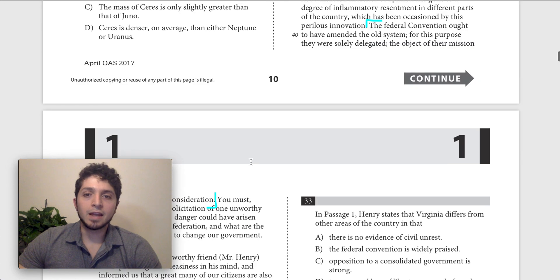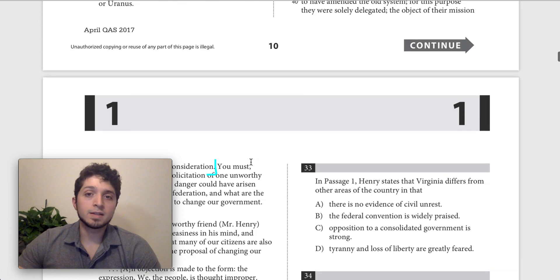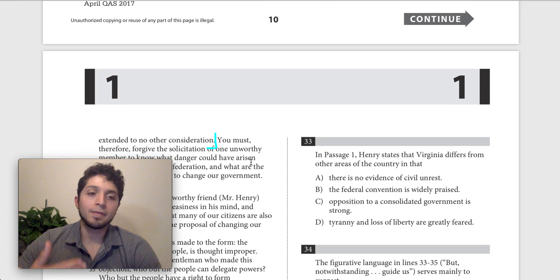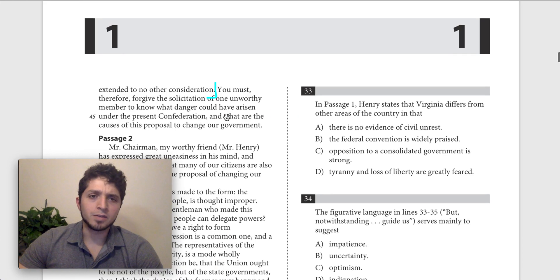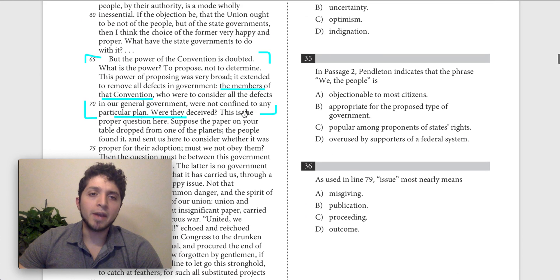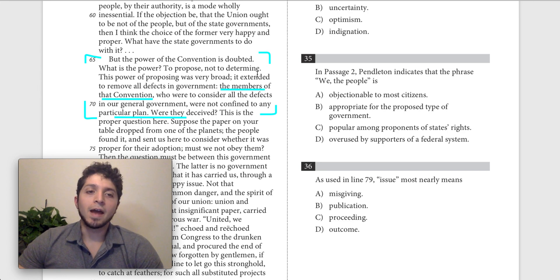And again, basically what C is saying is that the federal convention only should have fixed the old system. That's why they were delegated. That was their purpose. It extended to no other consideration. And Pendleton here is basically saying that they had the power. It extended, it was very broad powers. It extended to remove all the defects in the government. So let's find the answer choice for 41 about Henry's view.